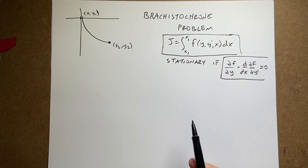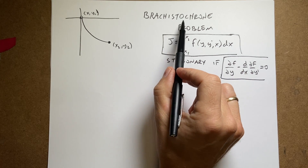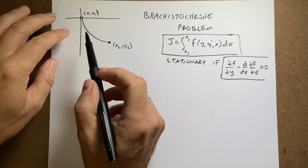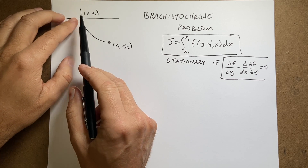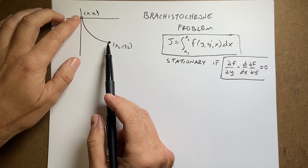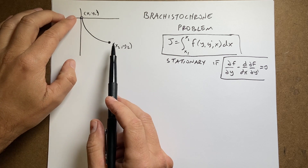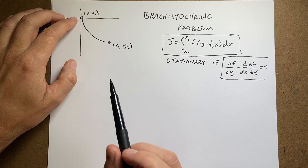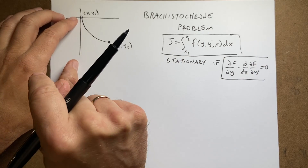I'm going to attempt to find the solution to the Brachistochrone problem. This is a famous problem where you imagine starting at some point and you want to get to another point, the lower point, along a frictionless path. The question is: what path gets there in the least amount of time — not the shortest distance, the least amount of time.